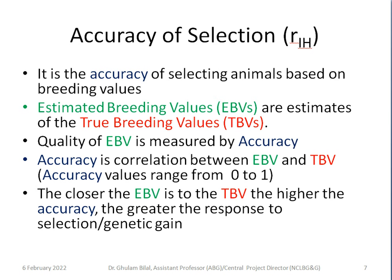Accuracy of selection is the accuracy of selecting animals based on breeding values. Breeding values are estimates of true breeding values, and since true breeding values are unknown, the quality of our estimated breeding values (EBVs) is measured by accuracy — which is the correlation between estimated breeding values and true breeding values. Accuracy values range from 0 to 1: 0 means no correlation and 1 means perfect correlation. The closer the EBV is to the true breeding value, the higher the accuracy and the greater the genetic gain.